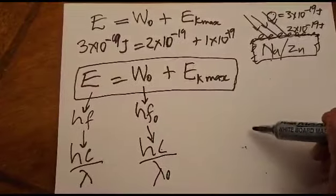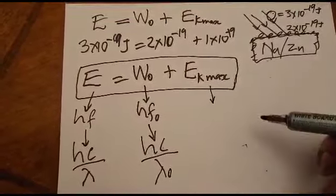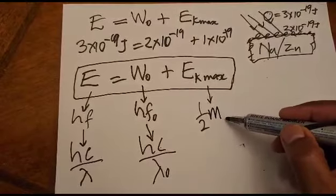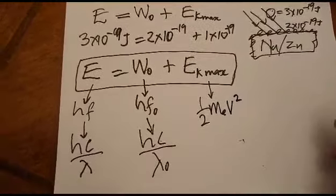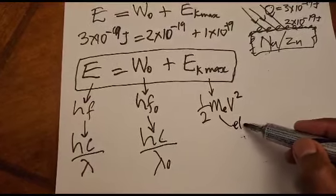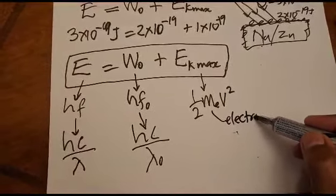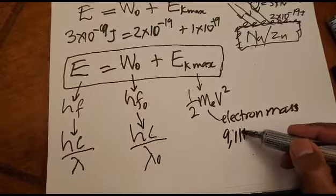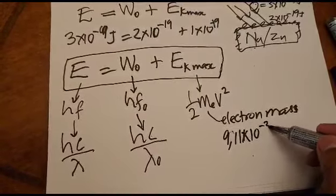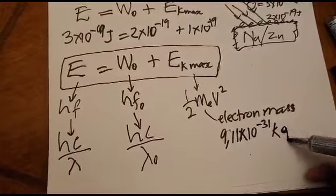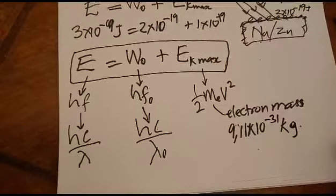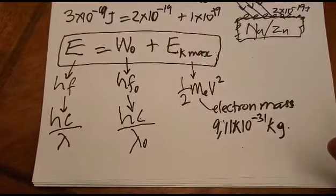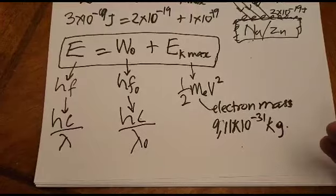For maximum kinetic energy, if it is not given, you must be given the speed of the ejected electrons. The formula uses electron mass, which is a constant: 9.11×10⁻³¹ kilograms. This constant applies to any ejected electron. This is what happens when electrons are ejected from the metal surface by radiation energy.